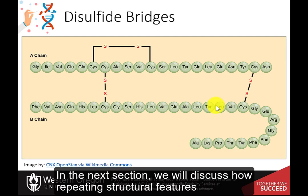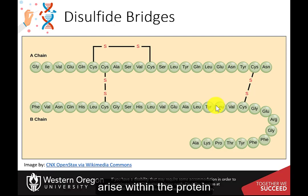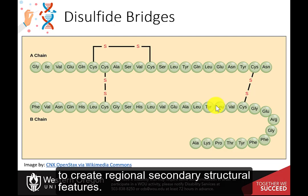In the next section, we will discuss how repeating structural features arise within the protein to create regional secondary structural features.